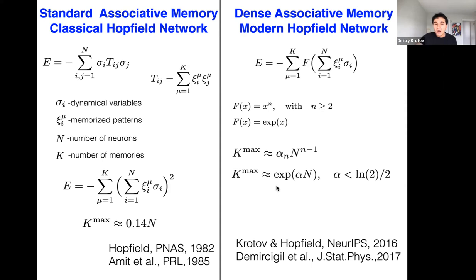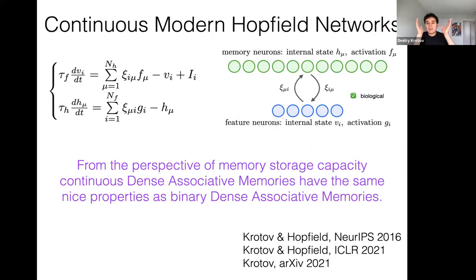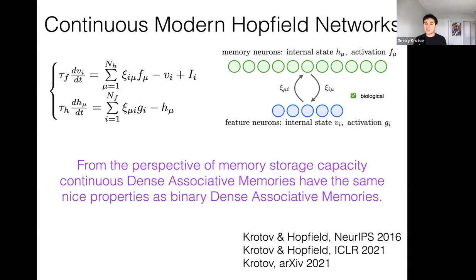When doing machine learning we don't really like working with binary variables because we want everything to be fully differentiable and continuous. It turns out a very related class of models can be formulated with continuous variables as well. With binary variables we flip spins sigma_i at each iteration; with continuous variables we write differential equations.